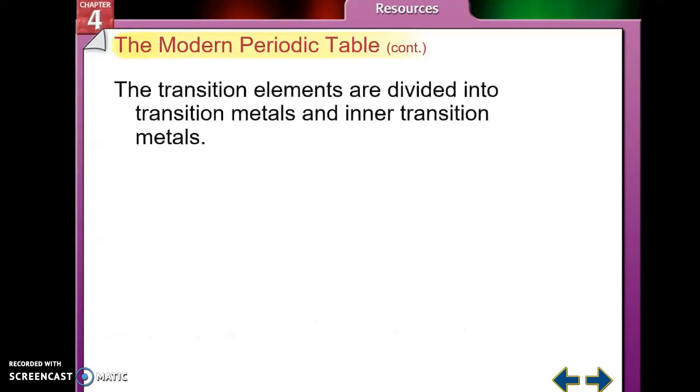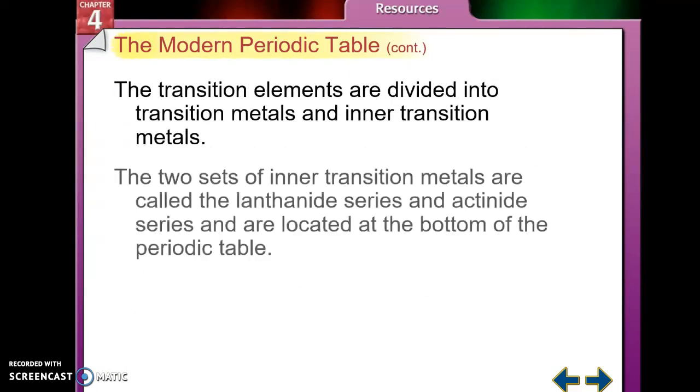Groups three through twelve are the transition metals. And then the inner transition metals are the lanthanides, which is the first row, and the actinides, which is the second row, which they are named after lanthanum and actinium.